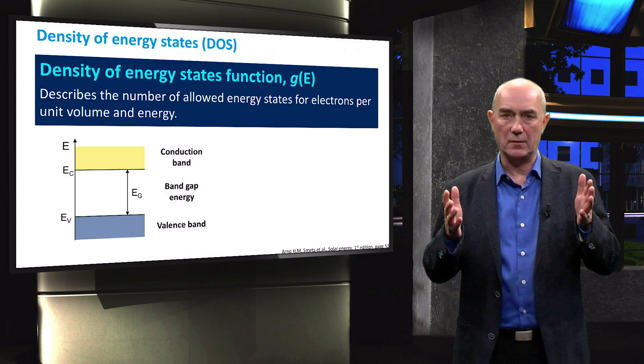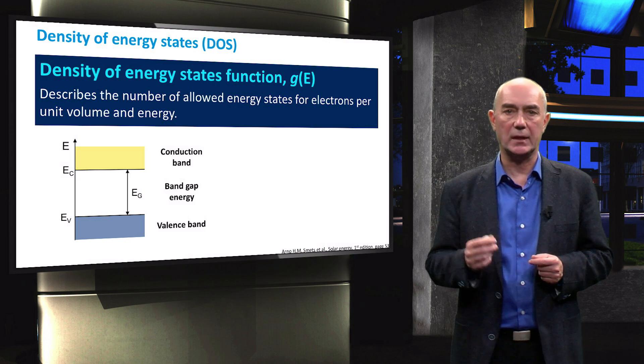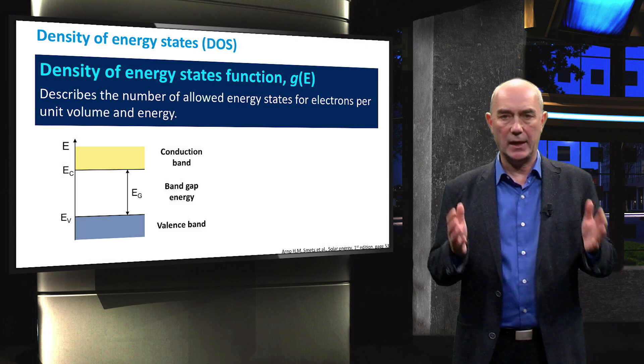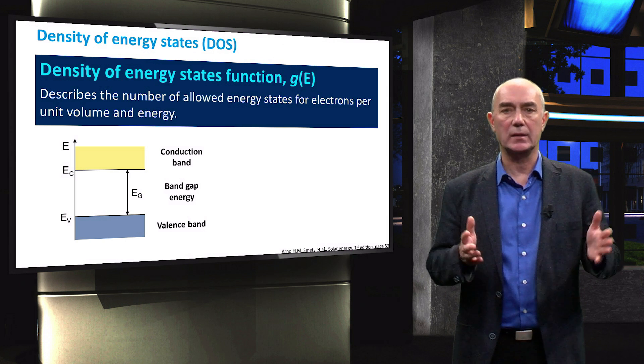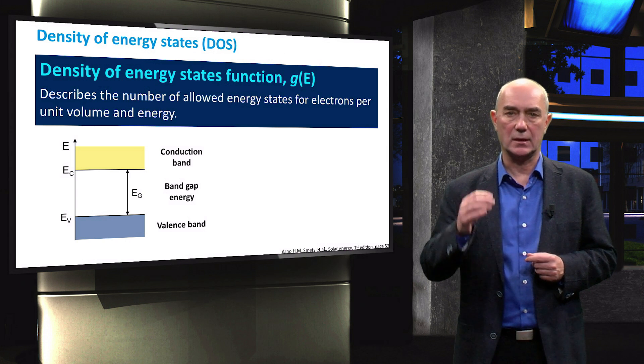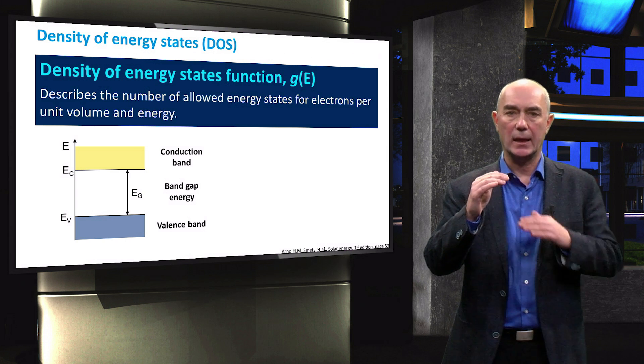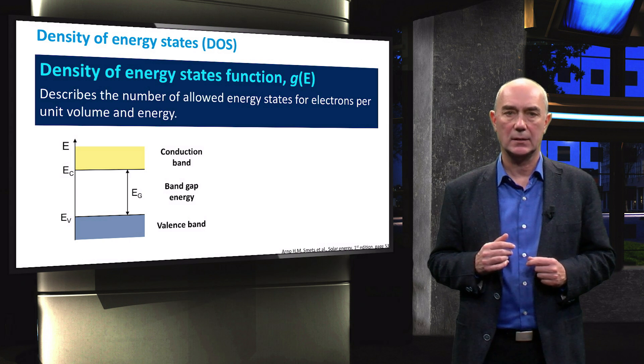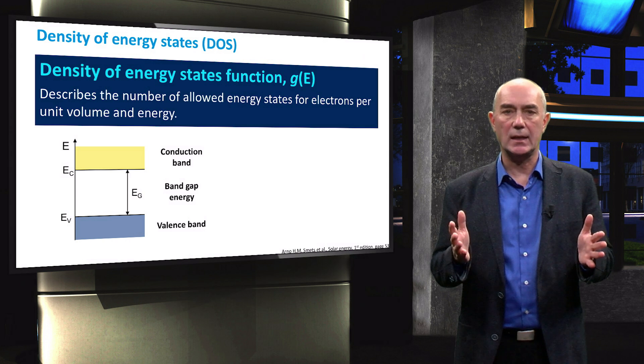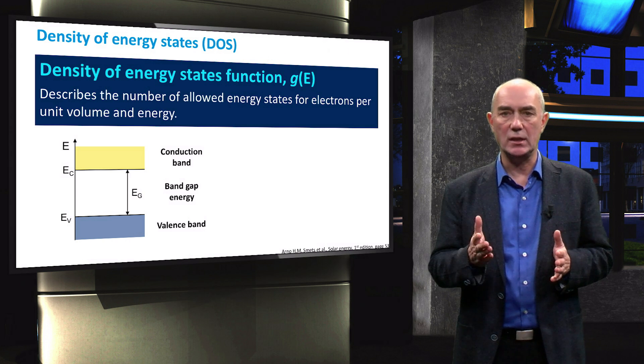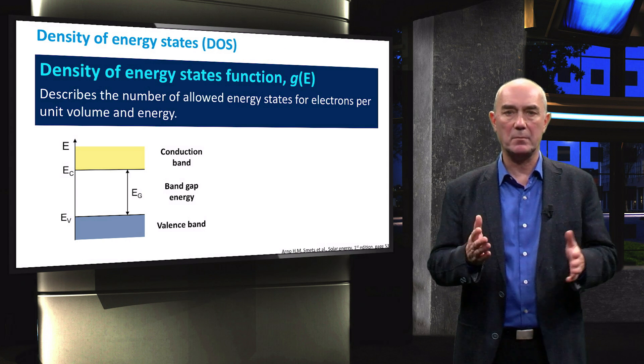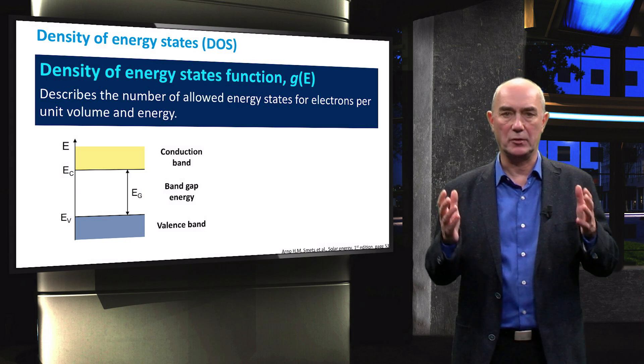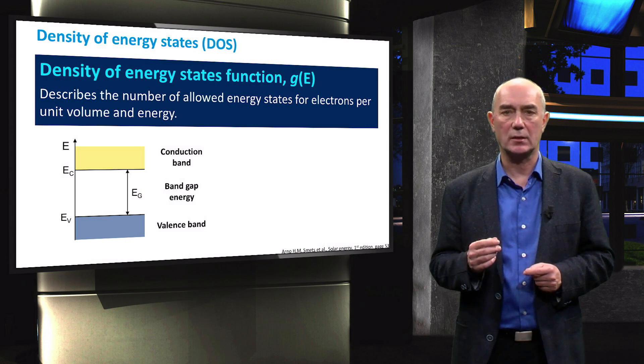We saw that only few of the levels are effectively occupied by charge carriers. On the left you can see our familiar simplified band diagram with the conduction band in yellow and the valence band in blue and the band gap in white. The density of energy states, which we denote as g, is an important parameter that tells us the number of allowed energy states per unit volume as a function of energy.